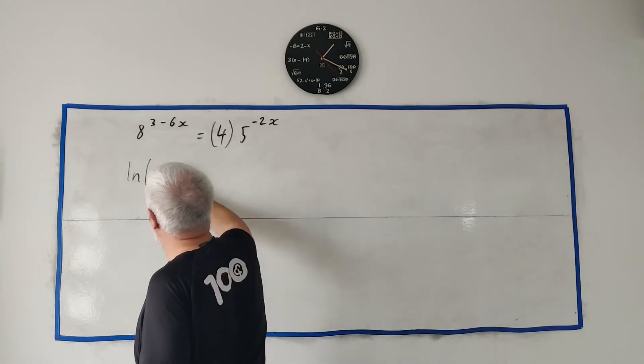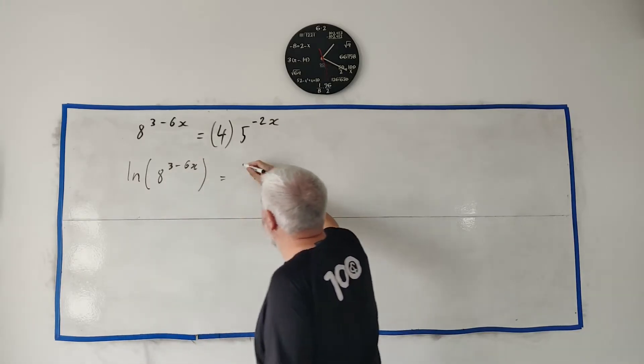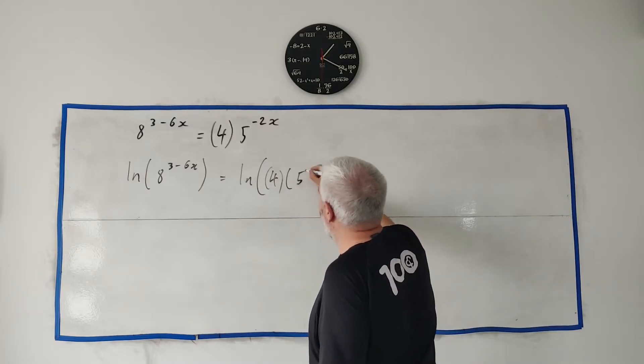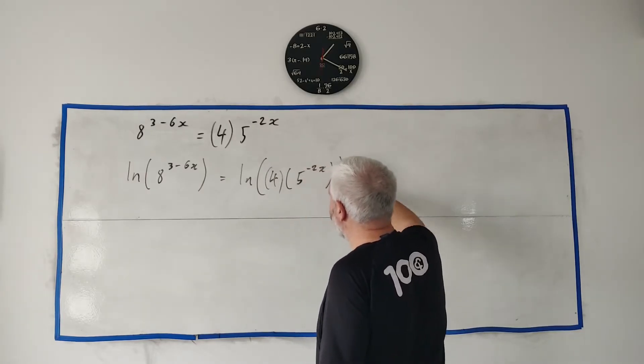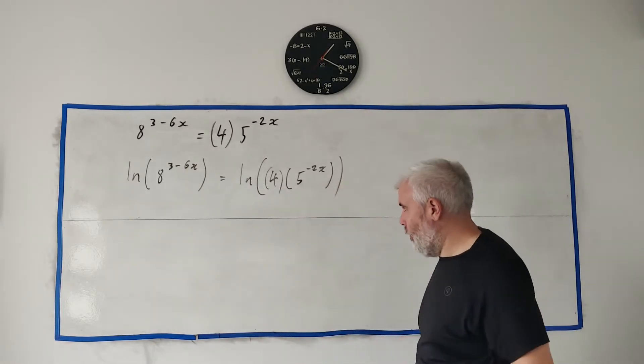So let's take the natural log of both sides. Natural log of 8^(3-6x) is equal to the natural log of all of this, 4 multiplied by 5^(-2x). This is the first bit we're going to have a little bit of trouble with.